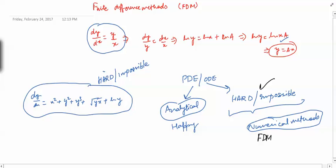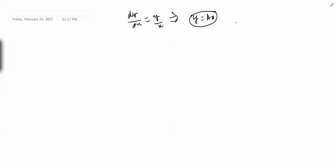Now what is the limitation of solving PDEs or ODEs with the finite difference method? Suppose I have the ODE dy/dx = y/x, whose solution is y = ax, and my domain is [0, 1]. When solving analytically, I know the solution at every point of my domain. But in FDM, what is the idea?